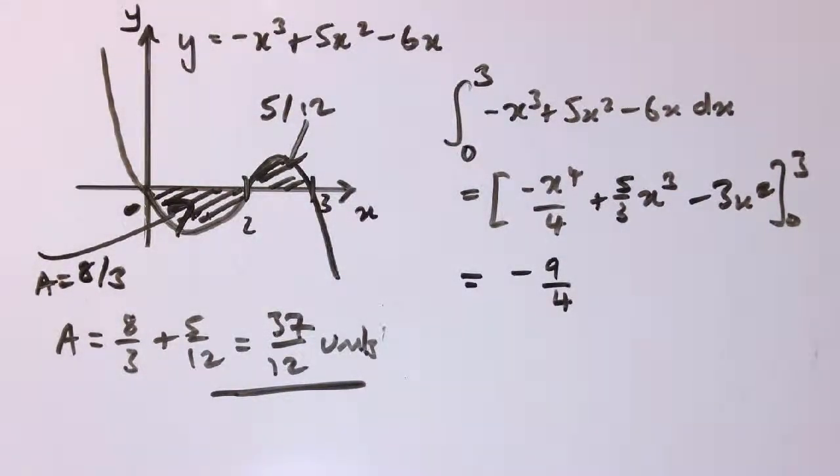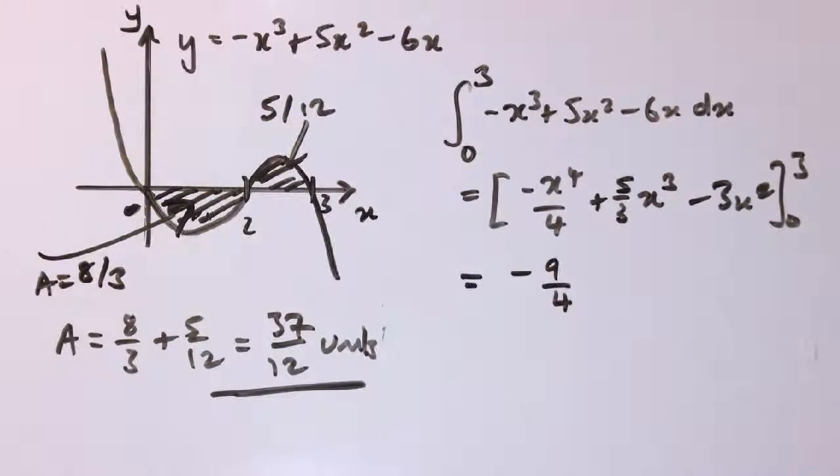So now that's clearly not the area between here and here, and even the positive version of this is not the area between here and here. So what's happened? How have we got this -9/4? Well, if you work it out, -9/4 is actually -8/3 + 5/12.